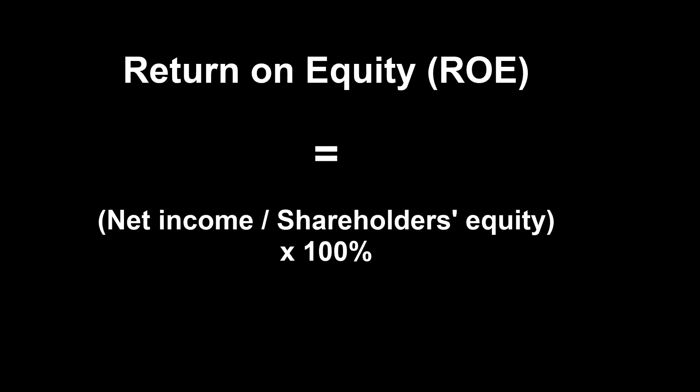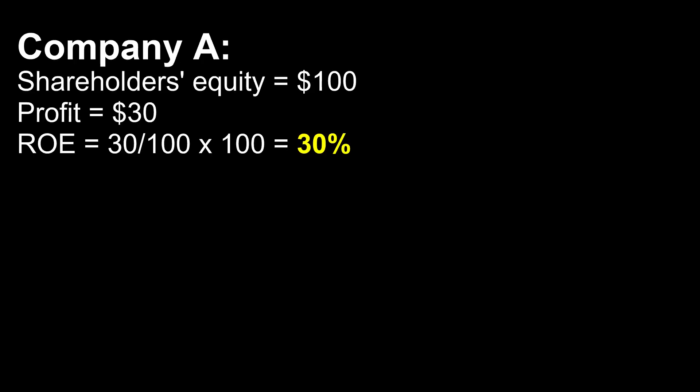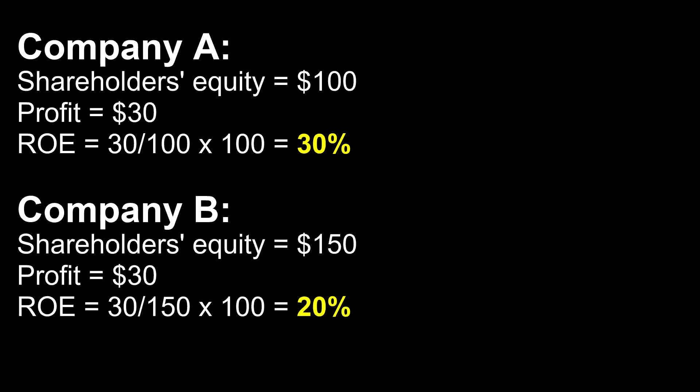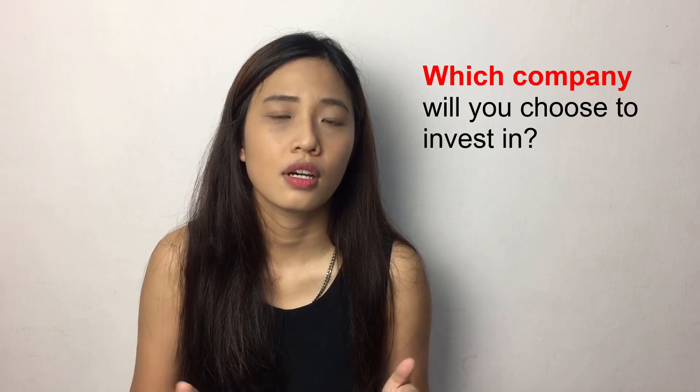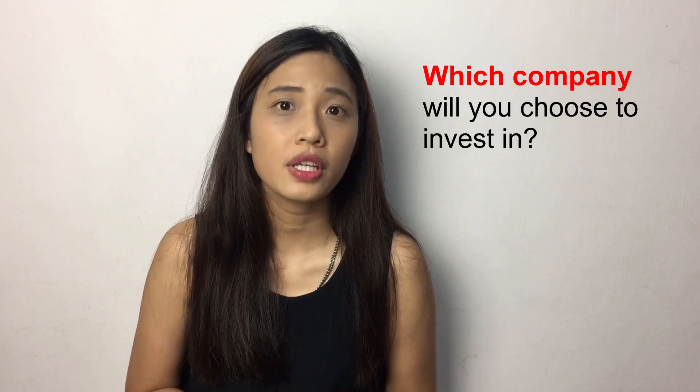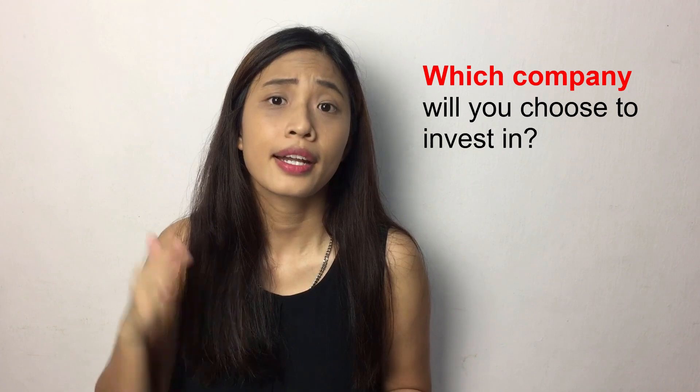To calculate ROE, Return on Equity, the formula is net income divided by total shareholders equity. For Company A, its ROE is 30 percent. For Company B, its ROE is 20 percent. As an investor, which company will you choose to invest in — Company A or Company B?